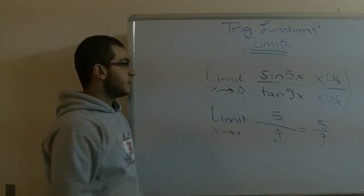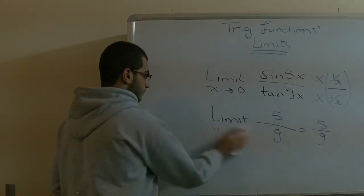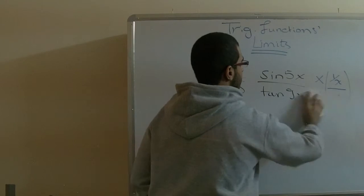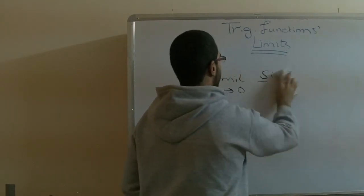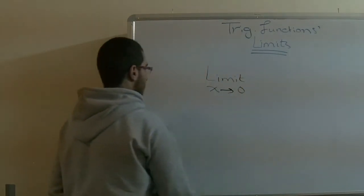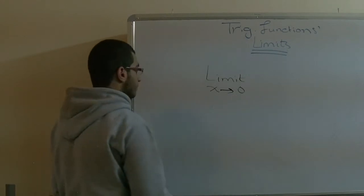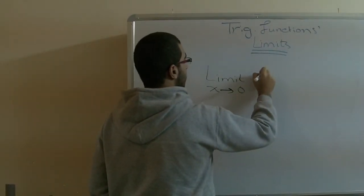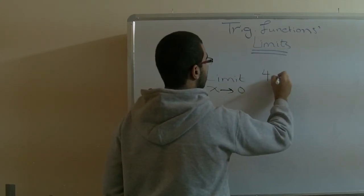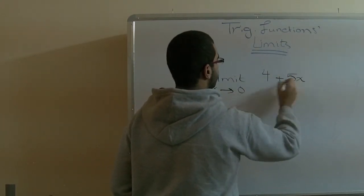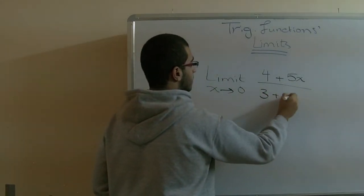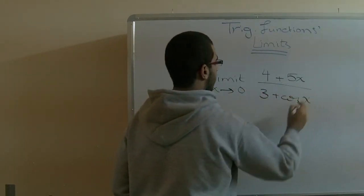So we can easily solve this expression. But don't get surprised when you have a problem with the cosine, because there are problems that work that way. For example, 4 plus 5x over 3 plus cosine x.